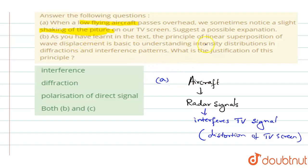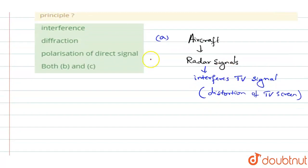The next thing is, as you have learned in the text, the principle of superposition - linear superposition of wave displacement is basic to understand the intensity distribution in diffraction and interference. What is the justification of this principle? So when you say it is linear superposition, basically let us understand what is a superposition principle.